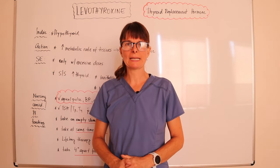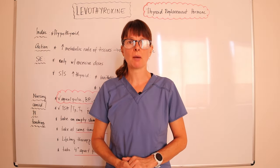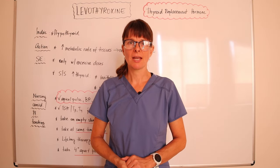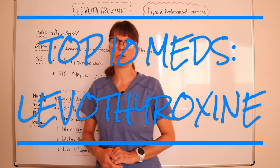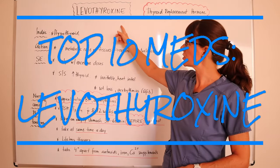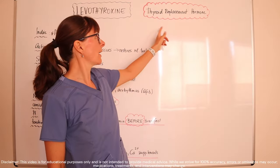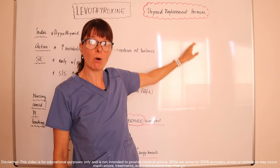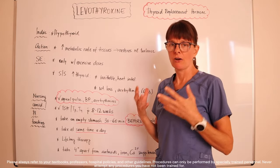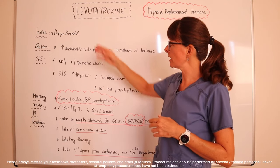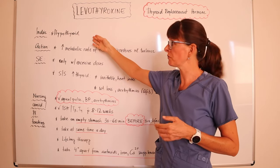Welcome to Nursing School Explained and another video in the top 10 most commonly prescribed medications list. Today we'll go over levothyroxine, which is classified as a thyroid replacement hormone. This is a unique class of medications, and the indication is hypothyroid — meaning too low of a thyroid.